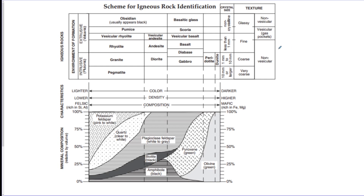One thing worth pointing out about the igneous rock chart: if you go to the igneous rock you want, like Gabbro, and draw a line straight down, whatever patterns it passes through are the minerals inside Gabbro — so that would be plagioclase feldspar, pyroxene, a little bit of olivine, and a little bit of amphibole.